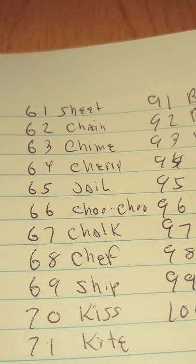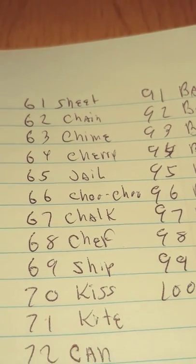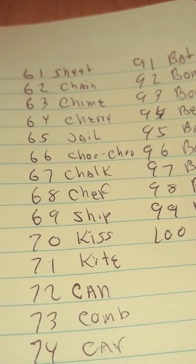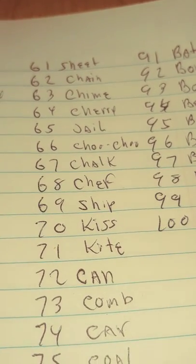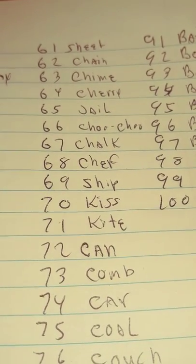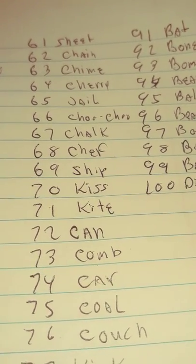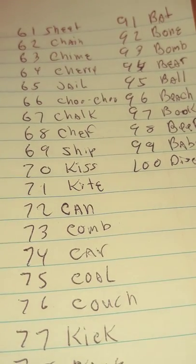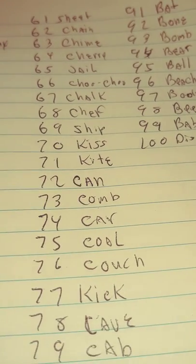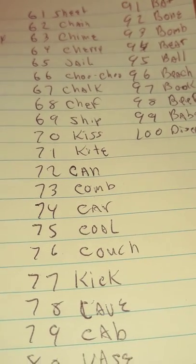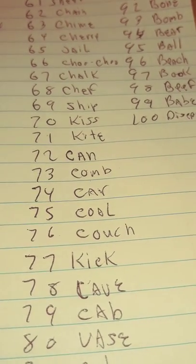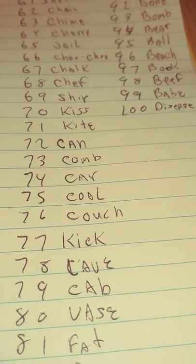70 is kiss, 71 is kite, 72 is can, 73 is comb - B is silent, 74 is car, 75 is coal, 76 is coach, 77 is kick, 78 is cave, 79 is cab, and 80 is vase.